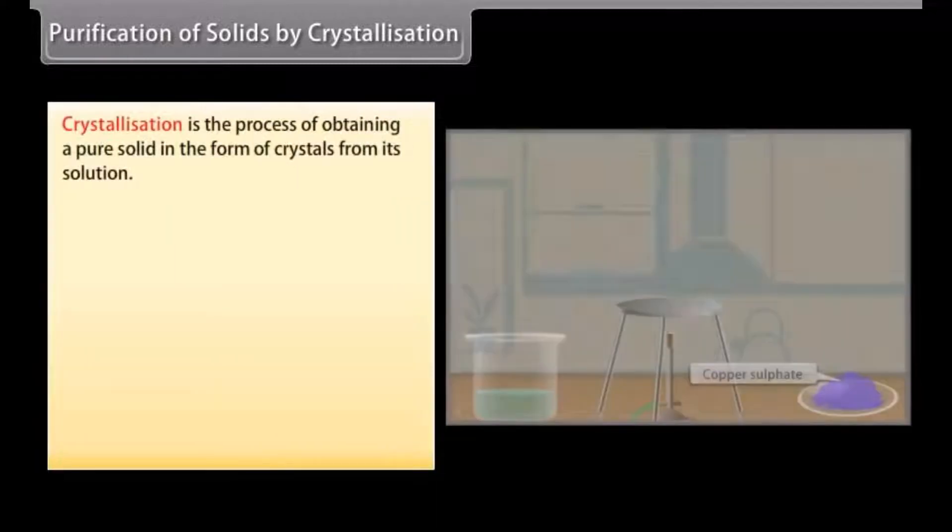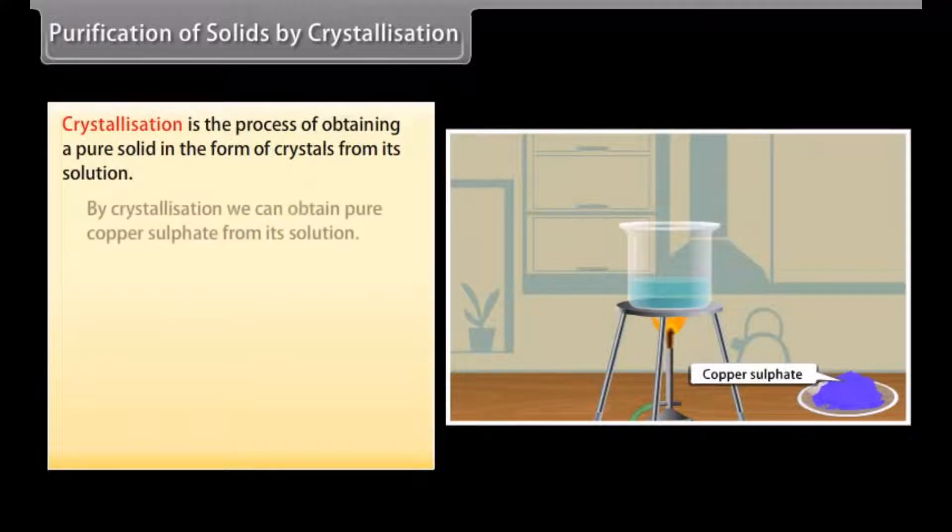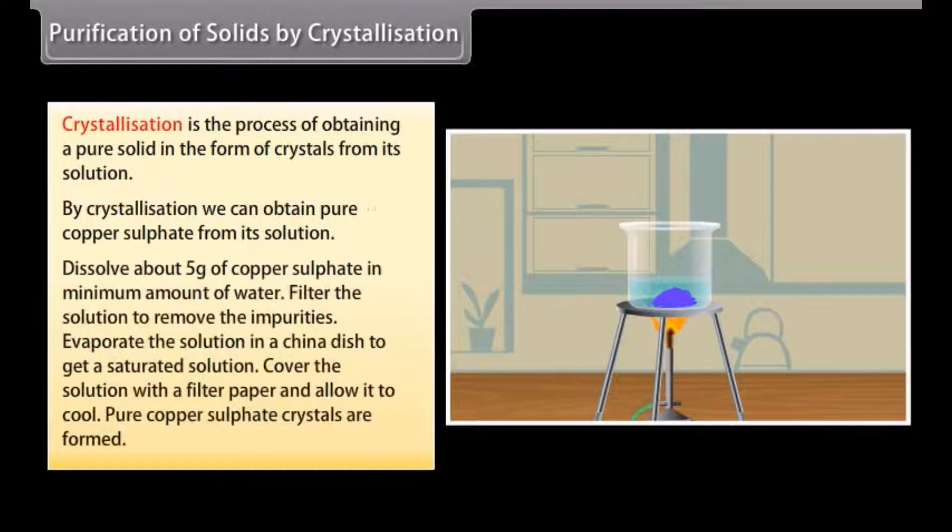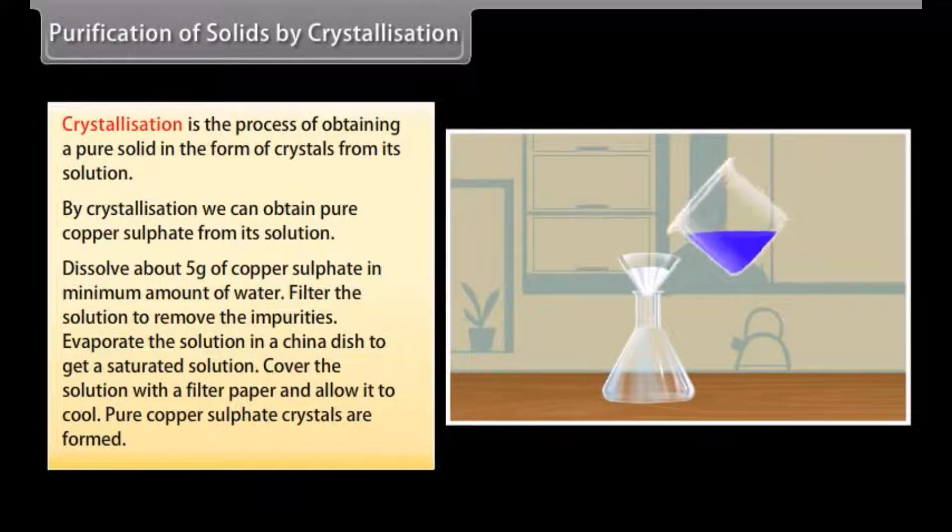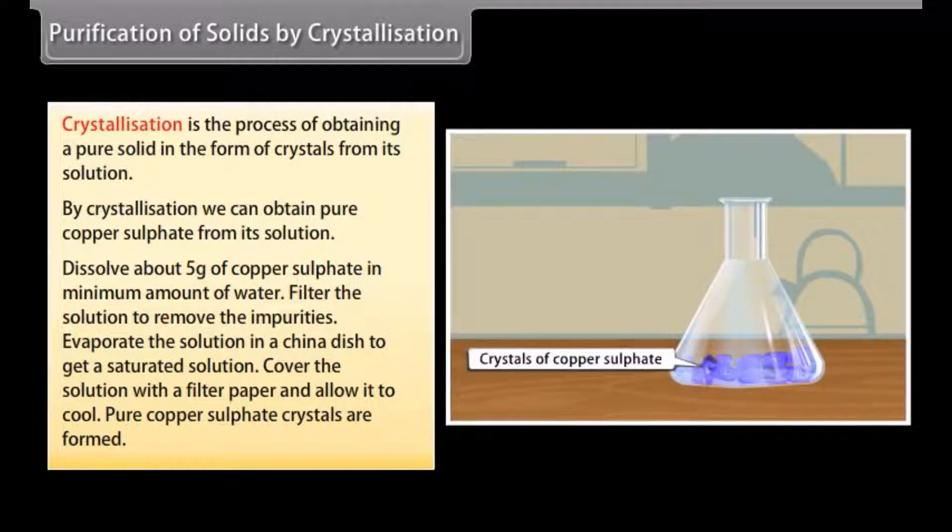Purification of solids by crystallization. Crystallization is the process of obtaining a pure solid in the form of crystals from its solution. By crystallization, we can obtain pure copper sulfate from its solution. Dissolve about 5 grams of copper sulfate in minimum amount of water. Filter the solution to remove the impurities. Evaporate the solution in a china dish to get a saturated solution. Cover the solution with a filter paper and allow it to cool. You will see pure copper sulfate crystals are formed.